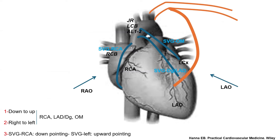For the graft to the RCA, I find that from left radial, the RCB catheter is more successful than a multipurpose catheter, usually with a counter-clockwise torque. For grafts to the left, I use any of three options. I usually start with a JR catheter, then if this fails, I use LCB or AL — usually Amplatz Left 1 for diagnostic and Amplatz Left 1 or 2 for interventions.